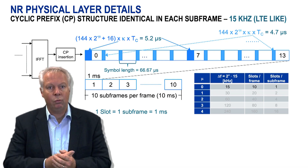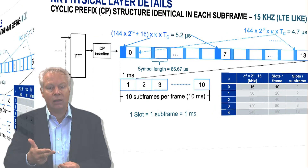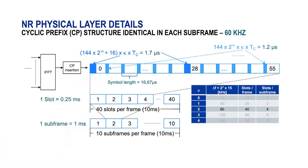To fit into the 1 millisecond raster, the cyclic prefix has to be slightly extended. Here I'll show one example for the 15 kHz case, and the next slide will show an example for the 60 kHz case. For the expert level: every 14th symbol structure, the cyclic prefix is slightly adapted to fit into the 1 millisecond case.